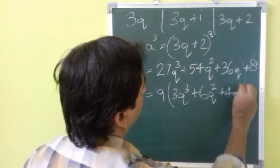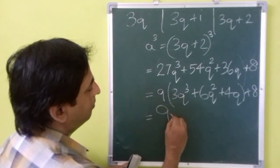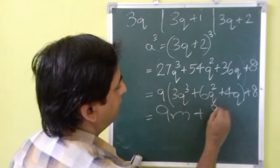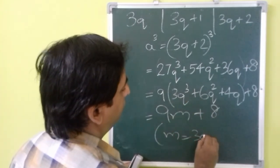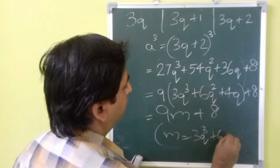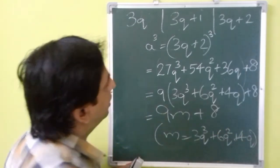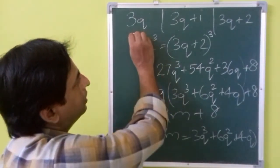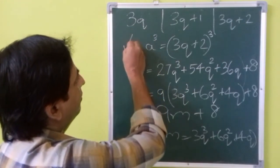Now we can see 9 is common in between all these 3 terms, so we can take it out. Taking 9 out, when you take 9 out, you get 9 times 3q cube plus 6q square plus 4q plus 8, which is in the form of 9m plus 8. So here we have brought all these in the form of 9m, 9m plus 1, and 9m plus 8.